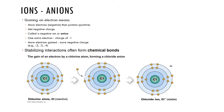An anion is another type of charged atom — in this case the atom has gained an electron, resulting in more electrons than protons, giving an overall net negative charge. An example is chlorine, which with an extra electron has an overall net negative charge.